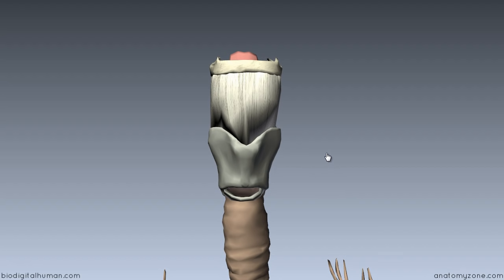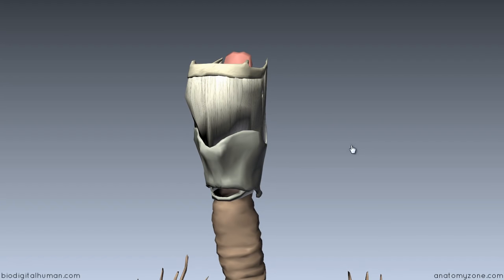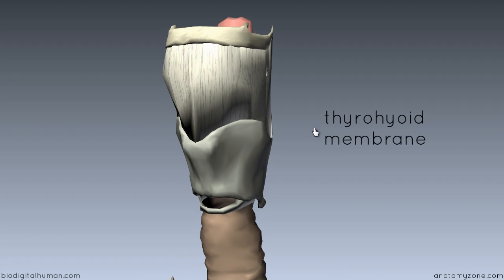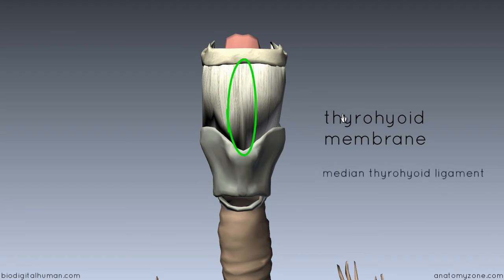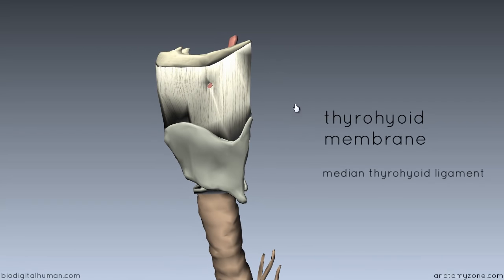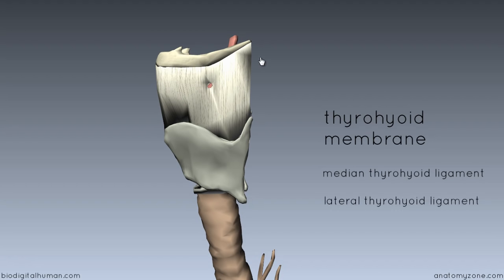The extrinsic ligaments are quite simple. The larynx attaches to the hyoid above. You can see this big membrane here connecting the thyroid cartilage to the hyoid bone — this is called the thyrohyoid membrane. Anteriorly it's thickened to form the median thyrohyoid ligament. And laterally, where the membrane attaches from the superior horn of the thyroid cartilage to the hyoid bone, it is thickened to form the lateral thyrohyoid ligament.